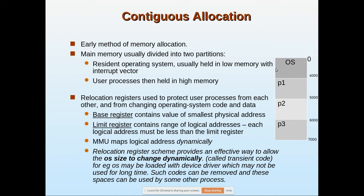Using those two registers — the base register and the limit register — the operating system protects the memory of one user from other users, as well as from the operating system space. This relocation register scheme is used to maintain memory protection between processes and the OS.